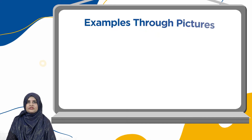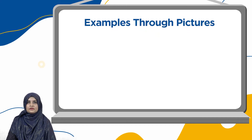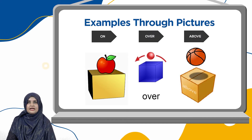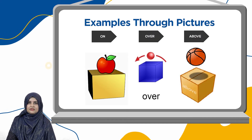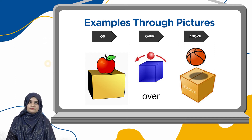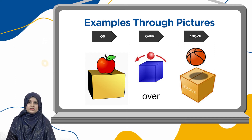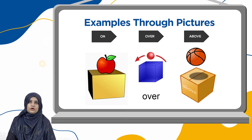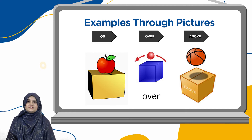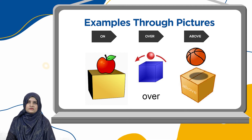Here are a few more examples for on, over, and above. The apple is on the box. The ball is over the box, while the football is above the box.